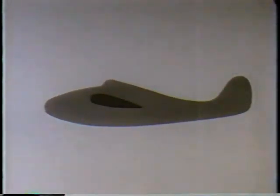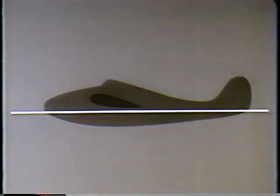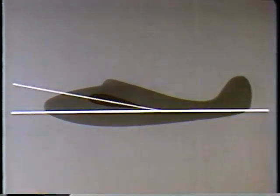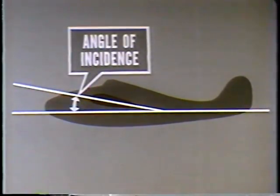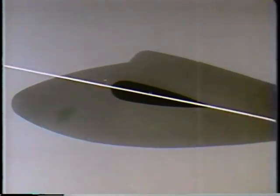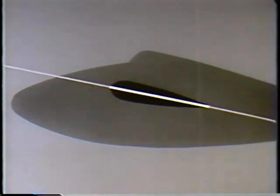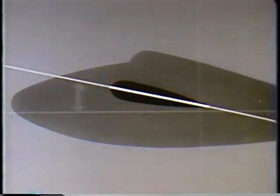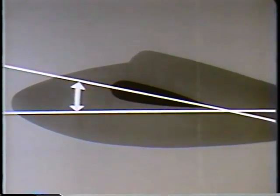On a fixed wing aircraft, the angle of incidence is determined by the relative position of the fuselage and the wing. The angle formed by the longitudinal axis of the aircraft and the cord line of the wing is the angle of incidence. The cord line of the wing is an imaginary straight line extending from the leading edge to the trailing edge. For our purposes, it is used to measure angles in reference to the wing. On a fixed wing aircraft, the angle of incidence cannot be changed by the pilot.